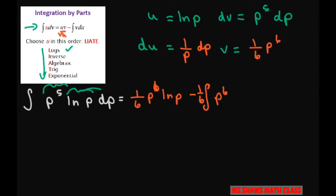And then you have du, and du is one over p dp. Now this right here just equals p to the fifth. So finally, if you want to write the final answer.